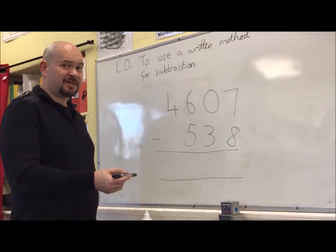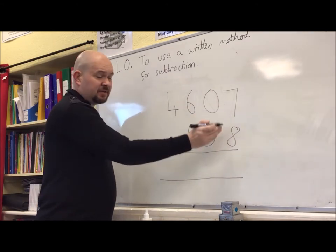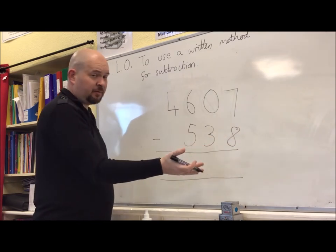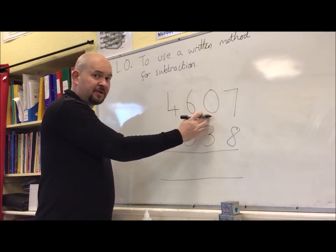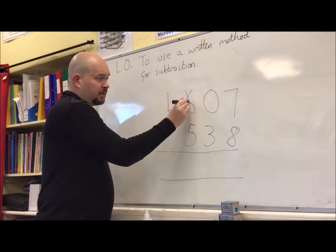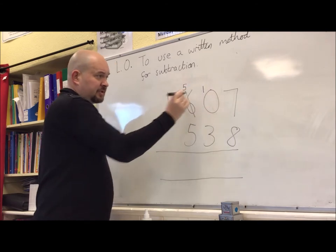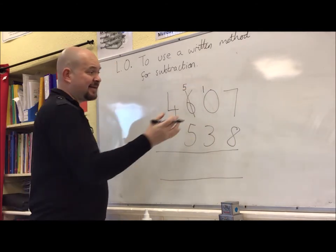This last example is the most tricky because we have a 0 in one of the numbers. 7 take away 8 I can't do. But I can't borrow from here because there's nothing here. So I need to come across to the hundreds column this time. Instead of that being 600, I shall make that 500, borrow 10 across to there like before.